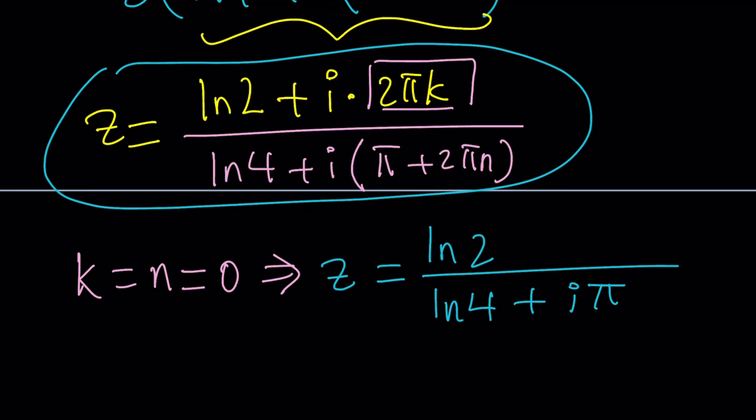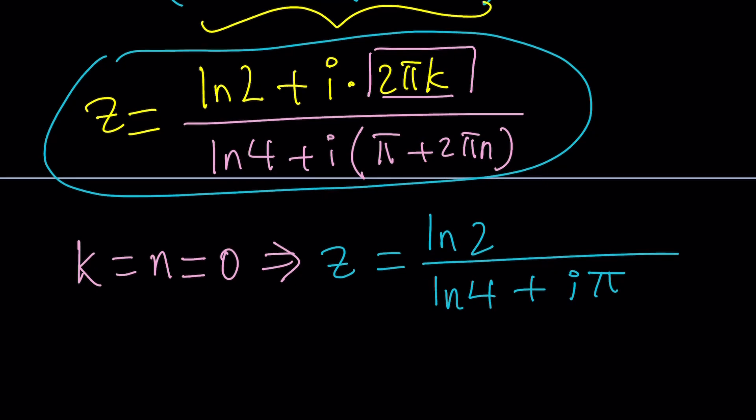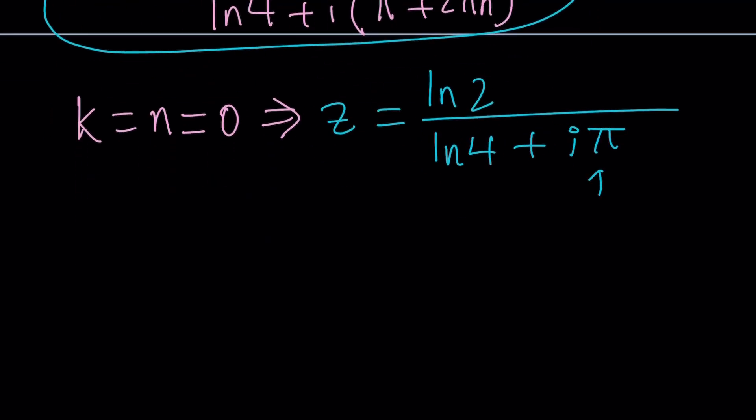So, this is basically using the principal value of the argument. Because it could be pi or 3 pi or 5 pi or whatever. And this is what I mean. If only we did not have the i pi, this would be ln 2 divided by ln 4. Suppose this disappeared. Obviously, it's not going to happen. But if it did, then we would have ln 2 over ln 4. And this would be 2 ln 2 because ln 2 squared. And then it would just turn into 1 half. So, this is what I meant by it's kind of like the square root, but not quite.